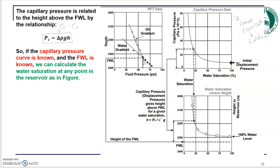Where the oil and water fluid pressures intersect, the capillary pressure is zero — that is your free water level. So if capillary pressure is zero, that depth is your free water level. In this case, looking at the plot, the free water level is around 2325 feet underground.